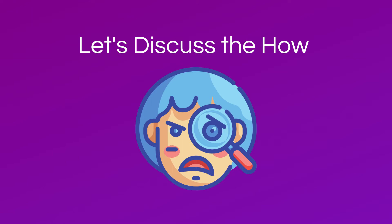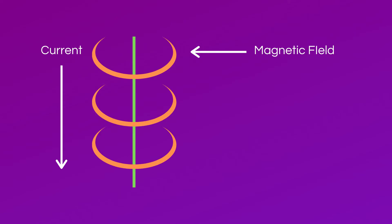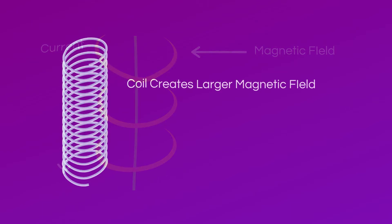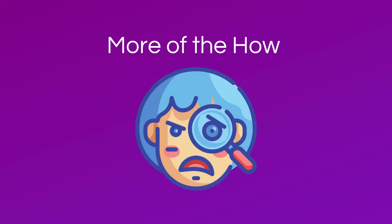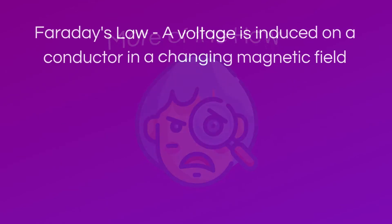The principles that govern how transformers work will enable you to understand many other elements of electronics. The first major principle to know is that when current goes through a conductor such as a wire, it creates a magnetic field. However, in order for the magnetic field to be strong enough for electronics applications, the wire must be coiled. So far this explains why there are coils on the transformer, but it doesn't explain how it works — that requires a second principle.